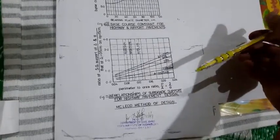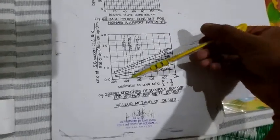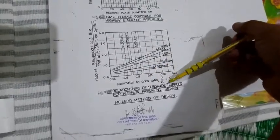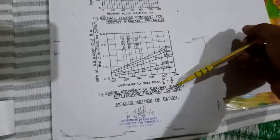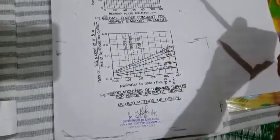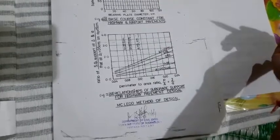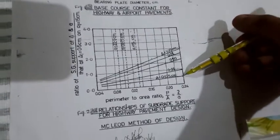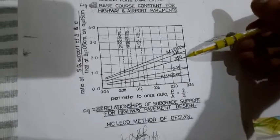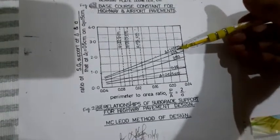This is the graph which McLeod uses for the design. Here you can see that on X axis, the perimeter to the area ratio is given by P by A, that is 2 by A. On Y axis you have the ratio of subgrade support for the deflections to the deflection 0.5 cm on a 30 cm diameter plate. Here we have different deflections like 0.125, 0.25, 0.50, 0.75 and 1 cm deflections.